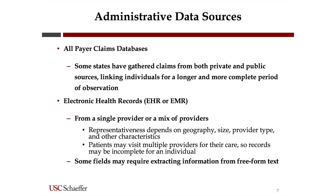There are also all-payer claim databases. Some states have gathered claims from all insurers or multiple insurers, both private and public, and put them together linking information across individuals. This may give you a more complete record of people's claims, because if they switch insurers, you get another insurer's set of claims. The disadvantage is that some were distributed for free but were last updated around 2016, and some look like tables rather than individual claims, so their usefulness is uncertain.